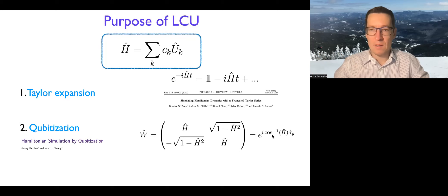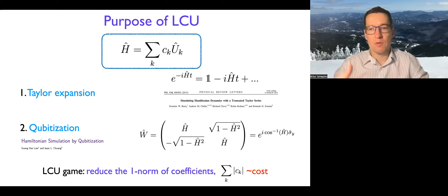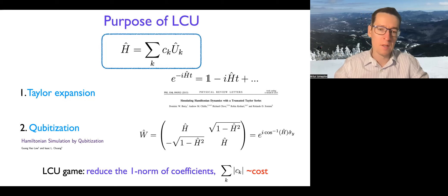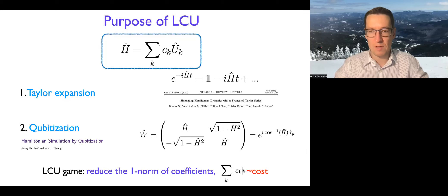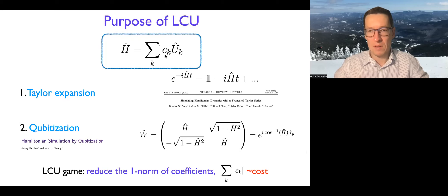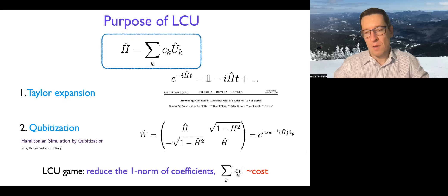What makes one linear combination of unitaries better than another? It's the cost of encoding the Hamiltonian as a linear combination of unitaries. That cost is related to the one-norm of coefficients — meaning that you sum the absolute values of the coefficients. The coefficients can all be made positive by absorbing any minus signs into the unitaries without changing their unitary nature. So the idea is that you sum the coefficients, and that essentially forms the cost.